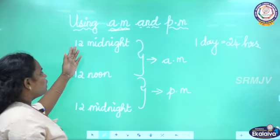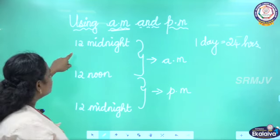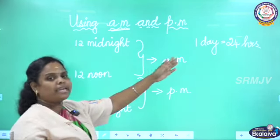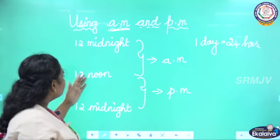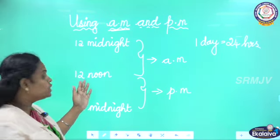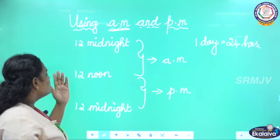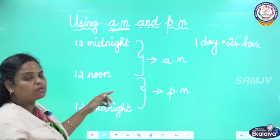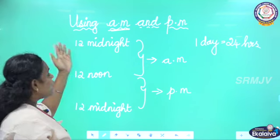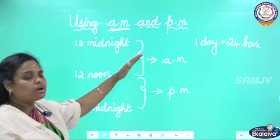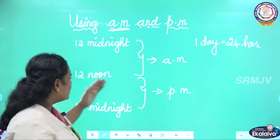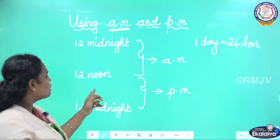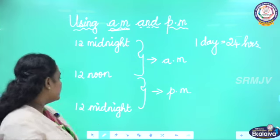After midnight 12 o'clock, suppose 1 o'clock at night — we say AM. Then after afternoon 12 o'clock, 1 o'clock in the afternoon — we say PM. So the same 1 o'clock can be either AM or PM depending on whether it is after midnight or after noon.